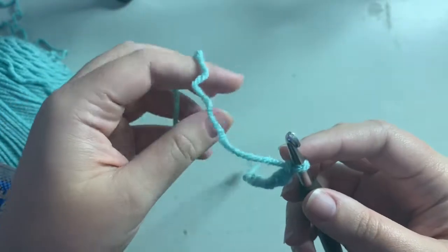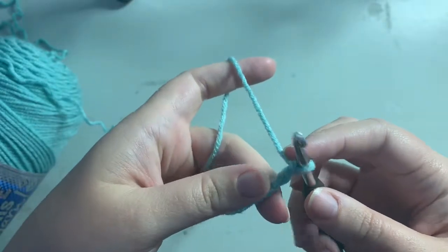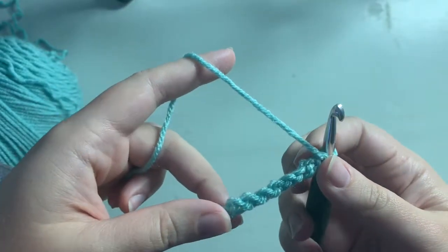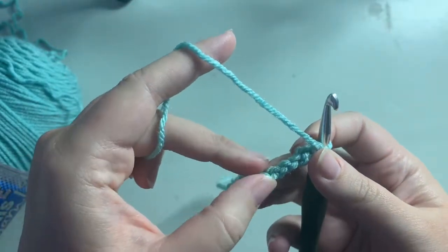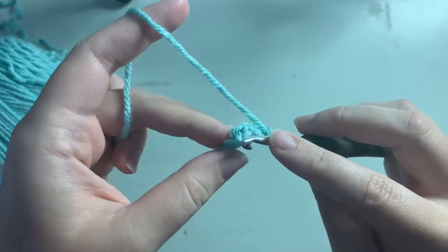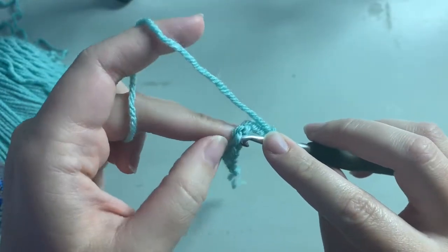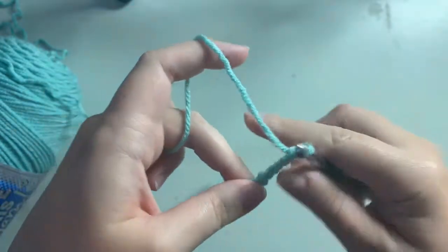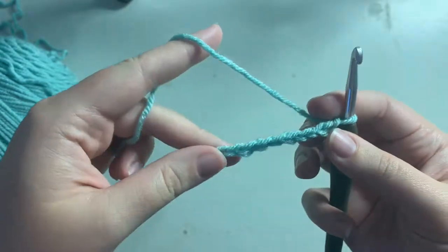But when you get a little bit more comfortable with crocheting, I would suggest turning it over and you see this back bump here, right here along all of them. If you work into that, then the whole underside of your piece looks like this and it looks a lot more finished than the way it's gonna look with what we're gonna do today.